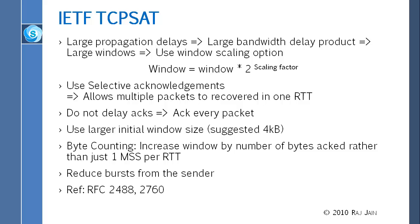That is a general rule we invented by doing lots of measurements and simulations, but mostly on ground links, not satellite links. So on satellite links, you don't want to go back to one. Use a larger initial window — they suggest four kilobytes, which is like eight MSS. Then, byte counting: somebody suggested increasing the window by the number of bytes acknowledged rather than one MSS. In their simulation, byte counting was better than segment counting.